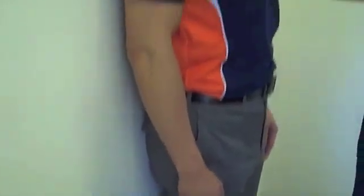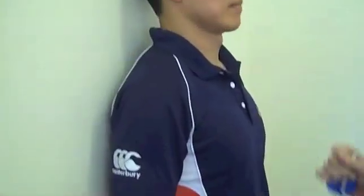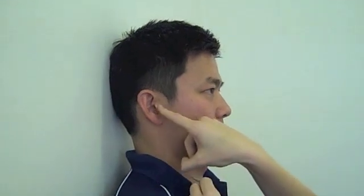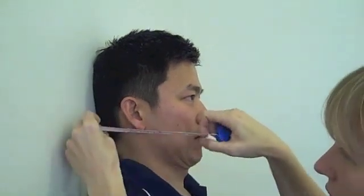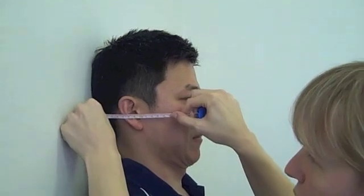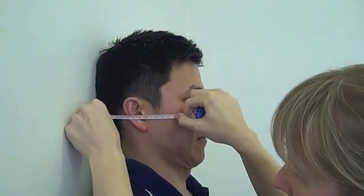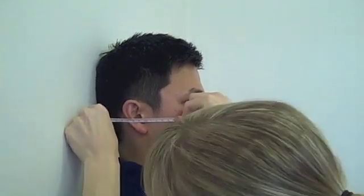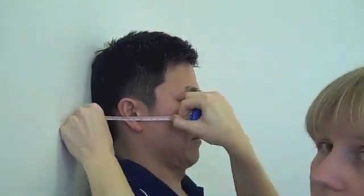We look at this part of the neck and we ask the patient to try to get the back of their neck as flat towards the wall as they can, giving this sort of double chin look. And we measure from the tragus — so this part of the ear — we measure the distance from the wall to the tragus, which here is 9.5cm.